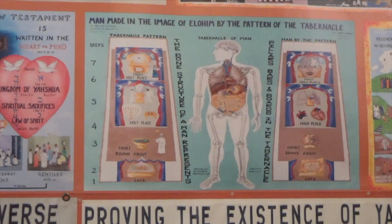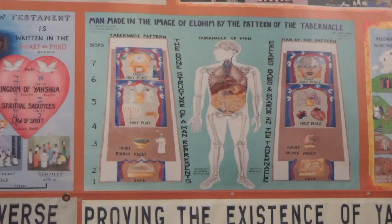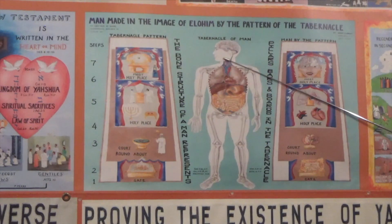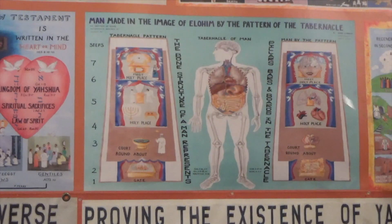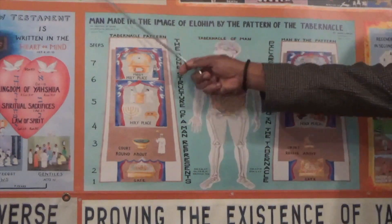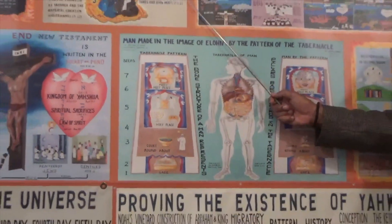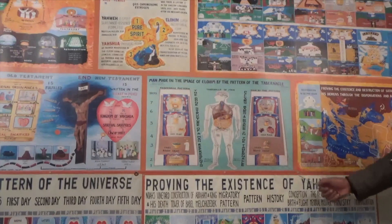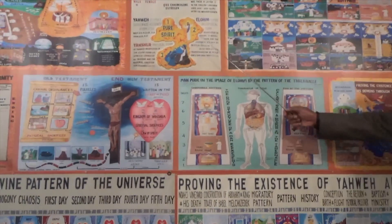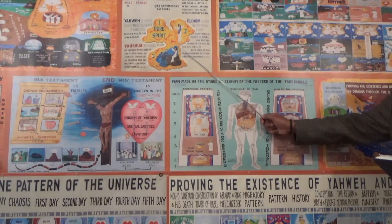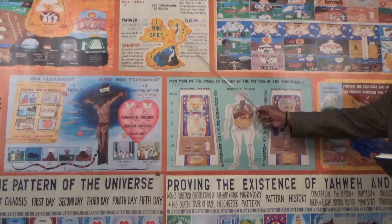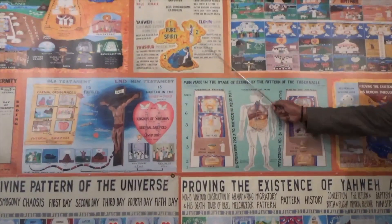The Apostle Paul, speaking of this, wrote: 'For we know that if our earthly house of this tabernacle were dissolved, we have a building of Elohim.' This is our earthly house or our outer man, and in the temple — which is Yahweh Elohim Yahshua — that is the true us, our inner man.